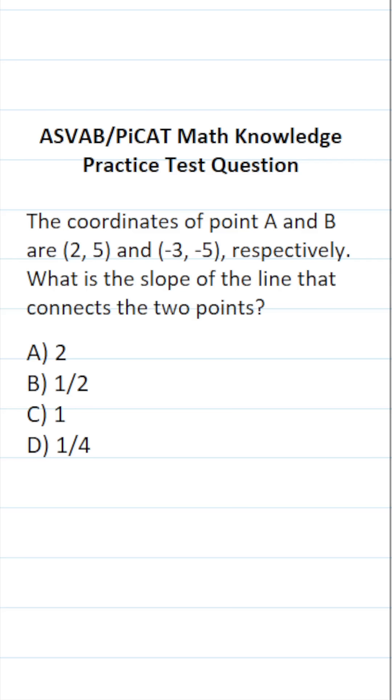So again, for the ASVAB and PICAT, you're not given a calculator or reference sheet, so you do have to commit these formulas to memory. In order to calculate slope, we're going to use the formula M equals Y2 minus Y1 all over X2 minus X1. Again, you have to commit that formula to memory.